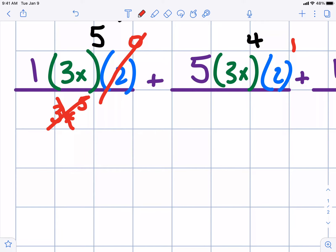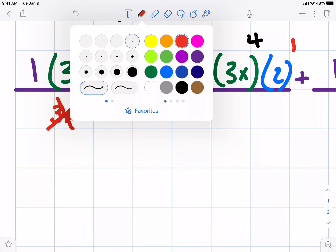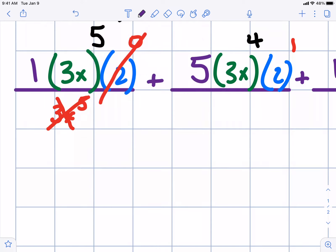3 to the fifth power is 243. The variables are going to be easy here because there's no calculations for that. It's just x to the fifth. There was a 1 out front, so that doesn't change anything in my final answer. 243x^5.